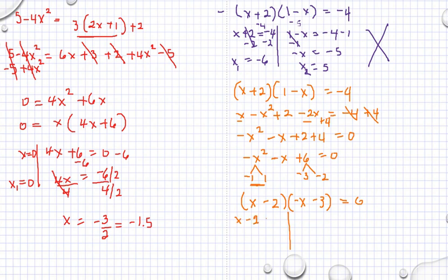x minus 2 is equal to 0. Adding both sides of the equation by 2, then we have x is equal to 2 — that's x sub 1. Negative x minus 3 is equal to 0. Adding both sides by 3, then adding both sides by x, we have negative 3 is equal to x. That's our x sub 2 equal to negative 3.